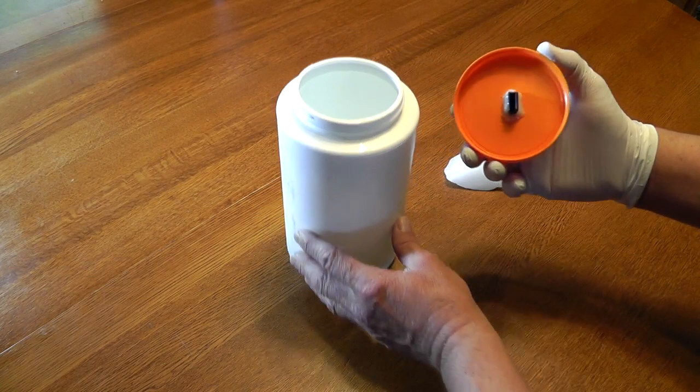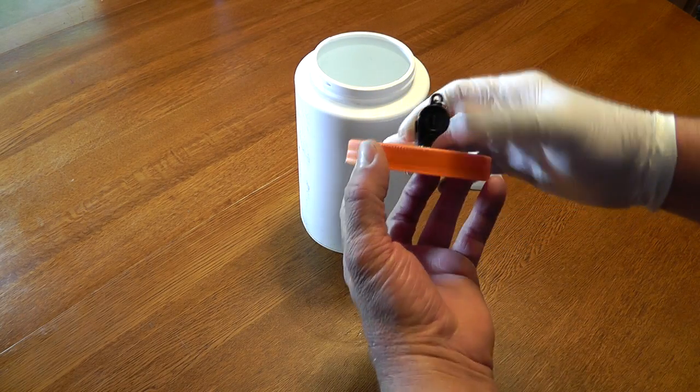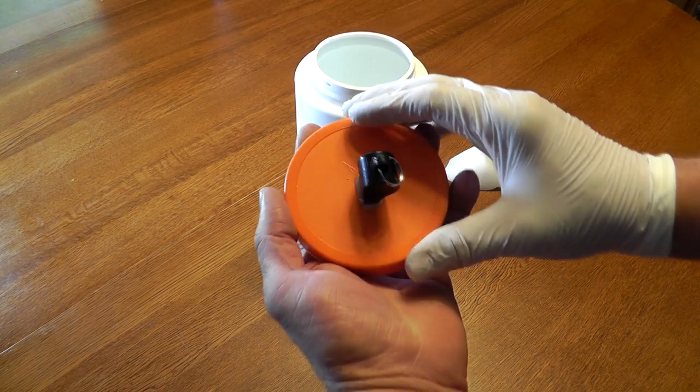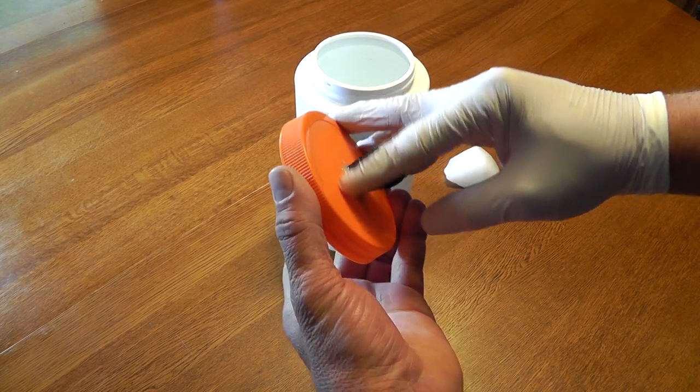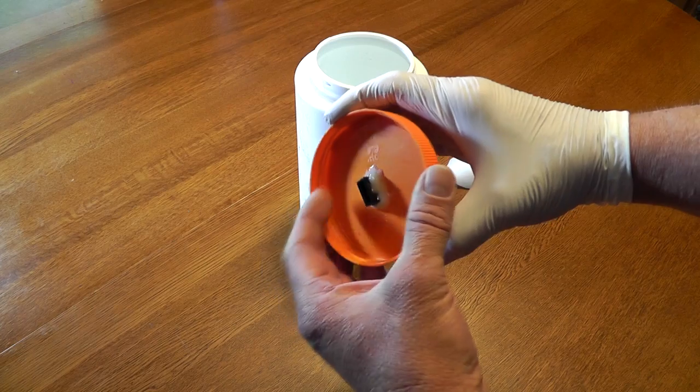Then you can see the lid. We took a whistle, and we cut a hole, and put hot glue around the top and around the bottom.